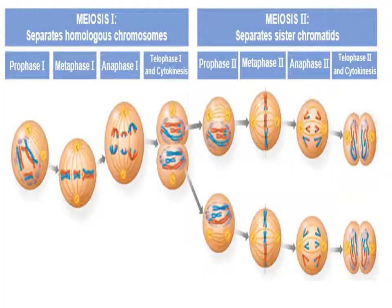Here's an overview of meiosis. Meiosis 1 includes prophase 1, metaphase 1, anaphase 1, and telophase 1 with cytokinesis. That should seem familiar — mitosis has prophase, metaphase, anaphase, telophase, and cytokinesis. In meiosis, make sure to include the Roman numerals to indicate it's meiosis and not mitosis. The second phase, meiosis 2, includes prophase 2, metaphase 2, anaphase 2, telophase 2, and cytokinesis.